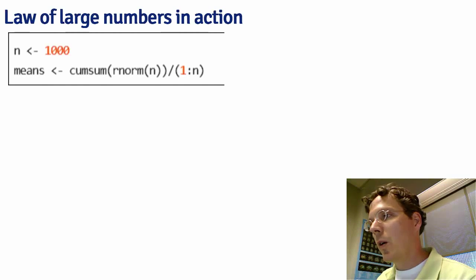I'm going to set my number of simulations to be 1,000. Then I'm going to generate 1,000 random normals and take their cumulative sum. Then dividing the cumulative sums by 1 over n gives the cumulative mean.